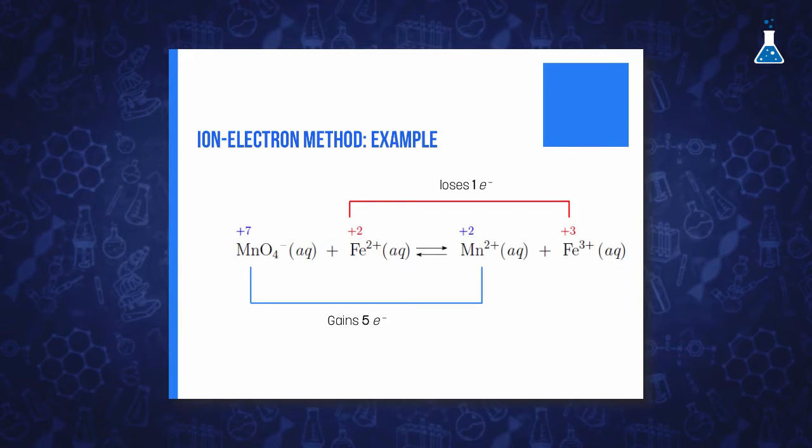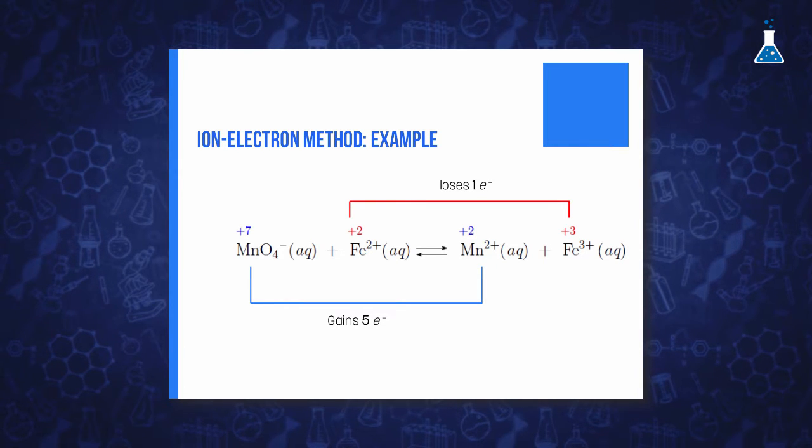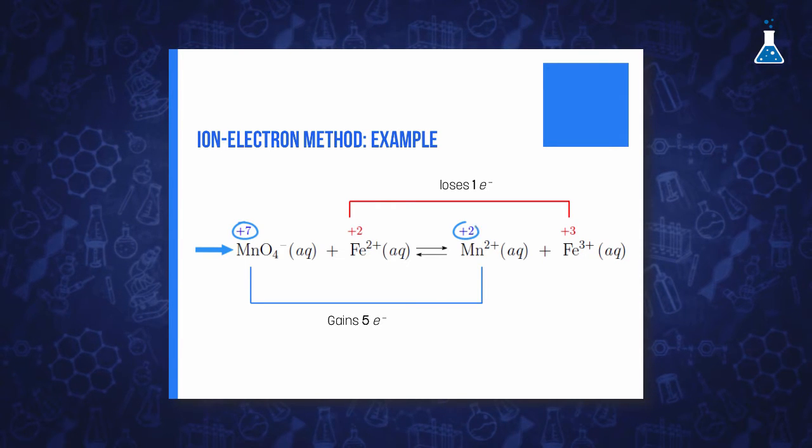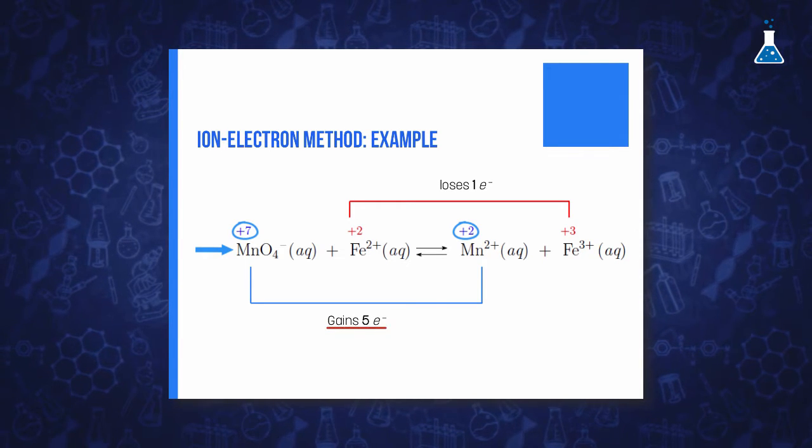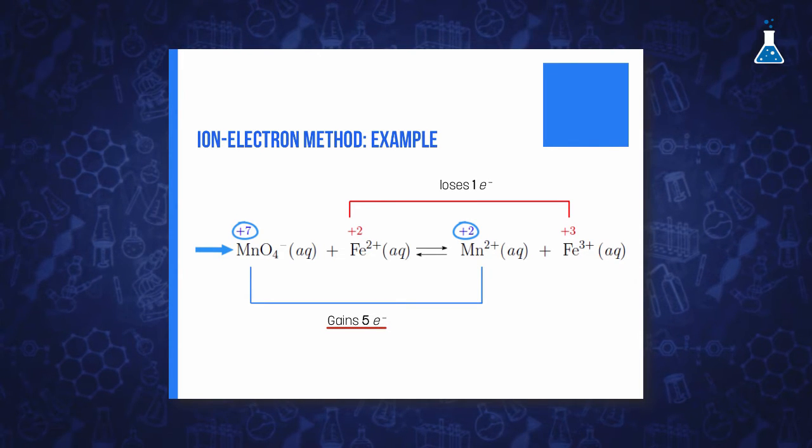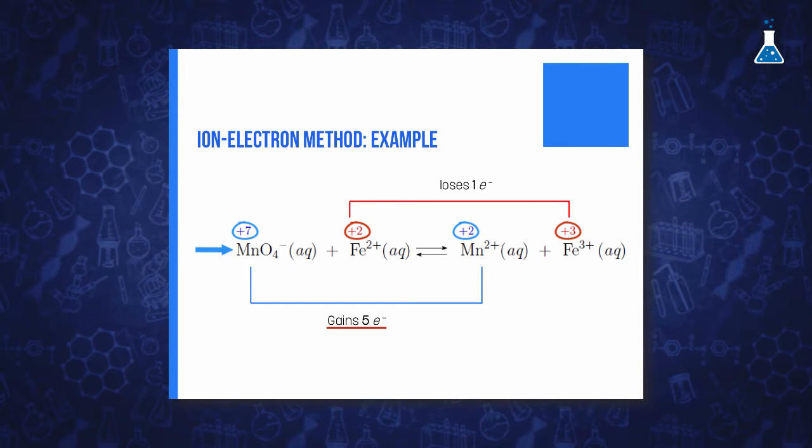Let's examine the method through the following reaction between permanganate ion and the iron 2 plus ion. If we deduce the oxidation number of all atoms of this reaction, we will see that permanganate is reduced from 7 plus to 2 plus, so it gains 5 electrons, while iron 2 plus increases its oxidation state from 2 plus to 3 plus, so it loses 1 electron.